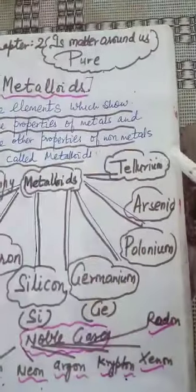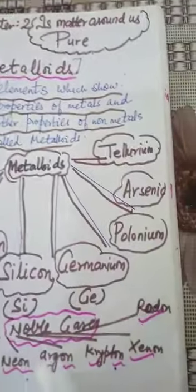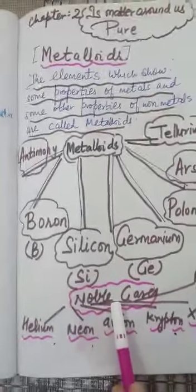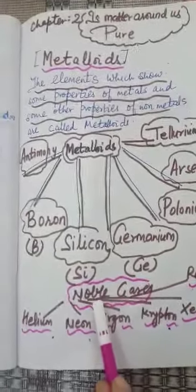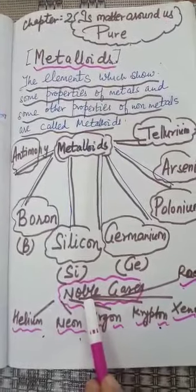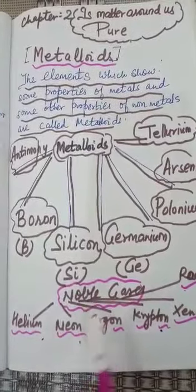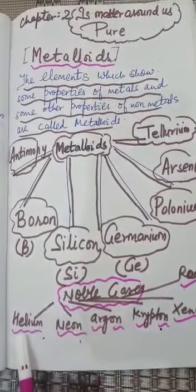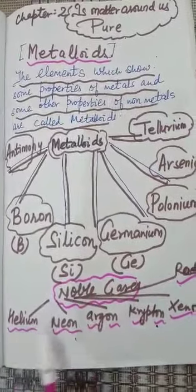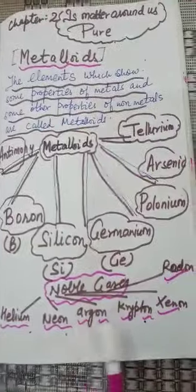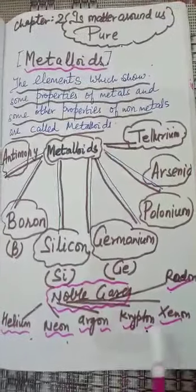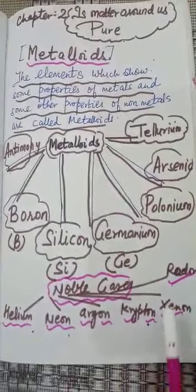Now, noble gases. The elements that make the family of noble gases are helium, neon, argon, krypton, xenon and radon.